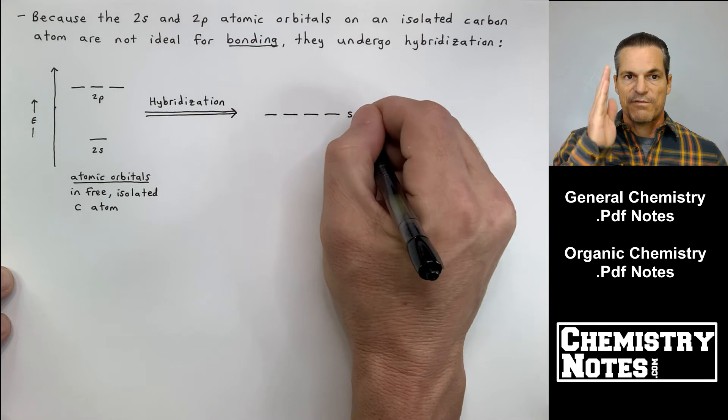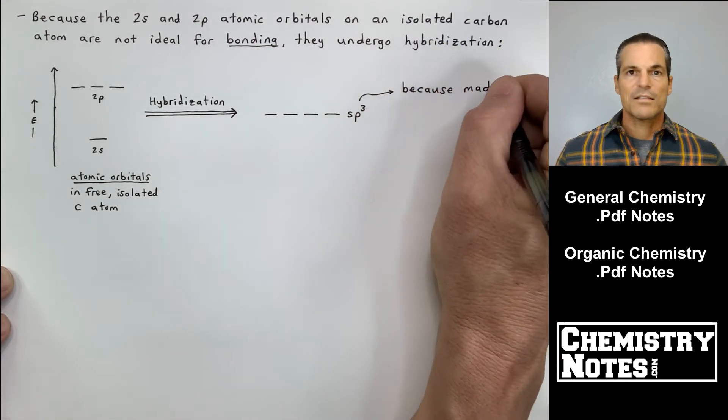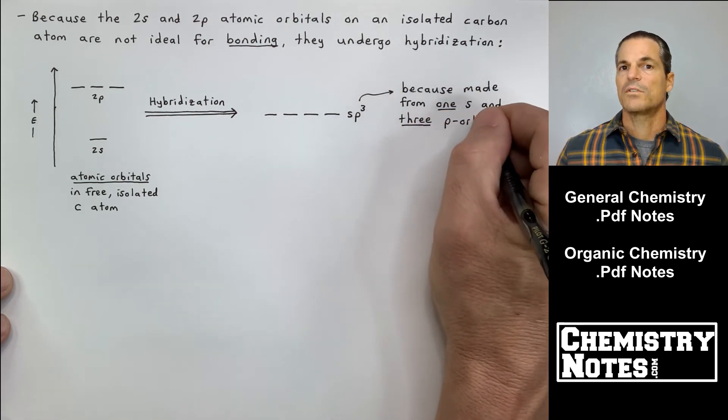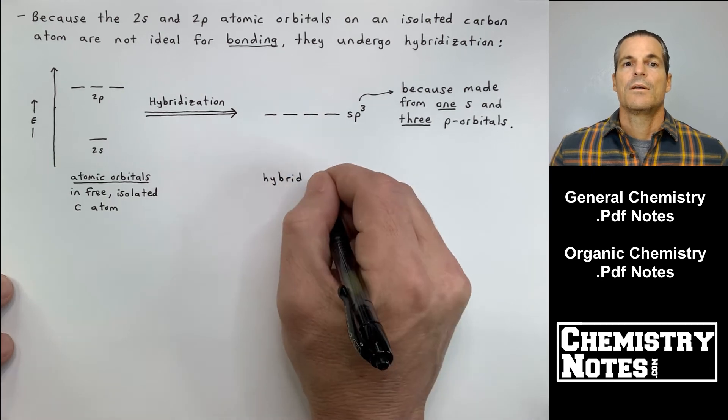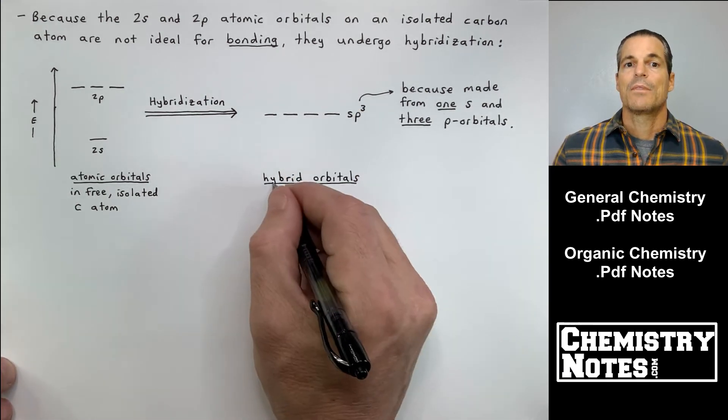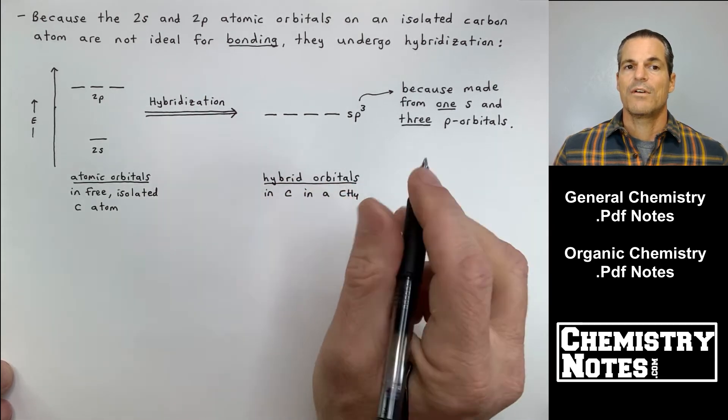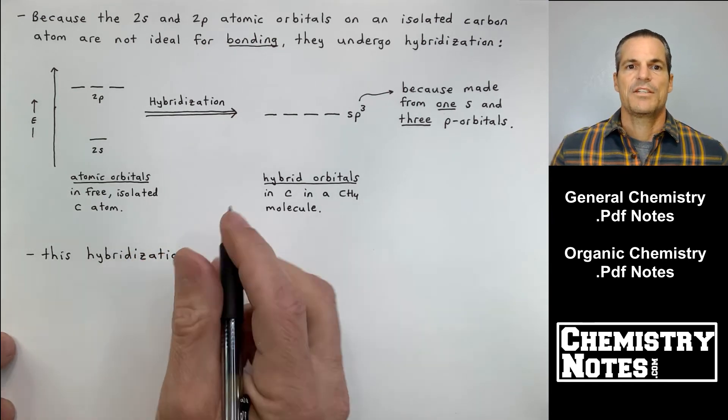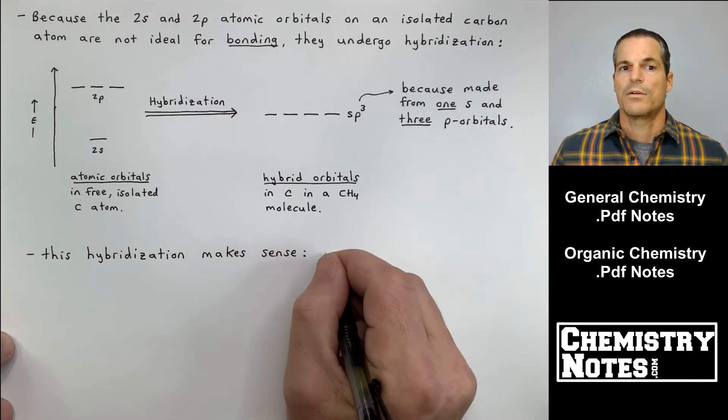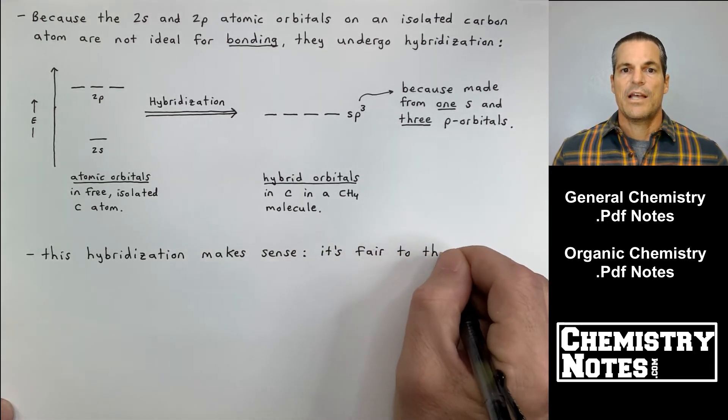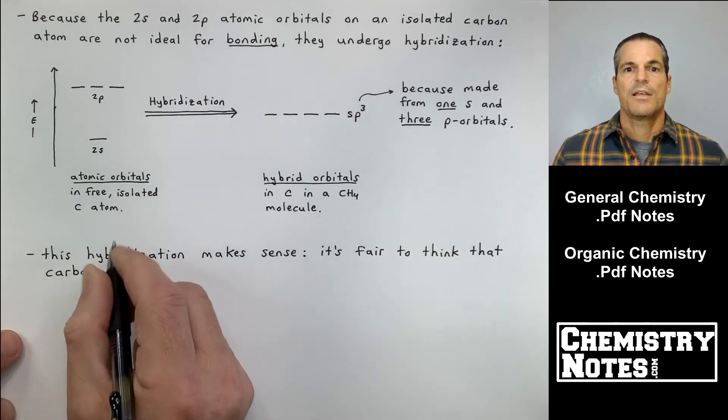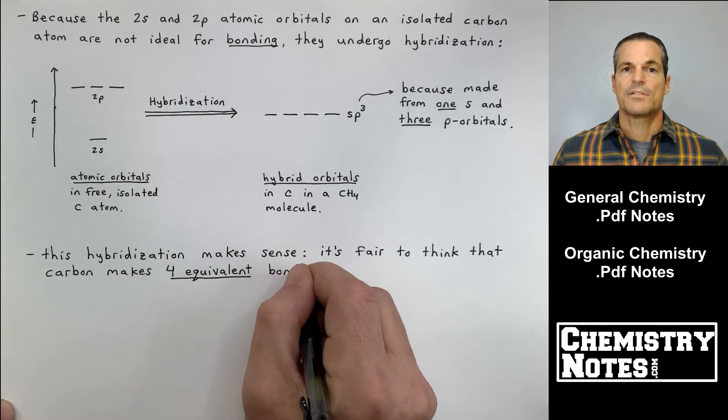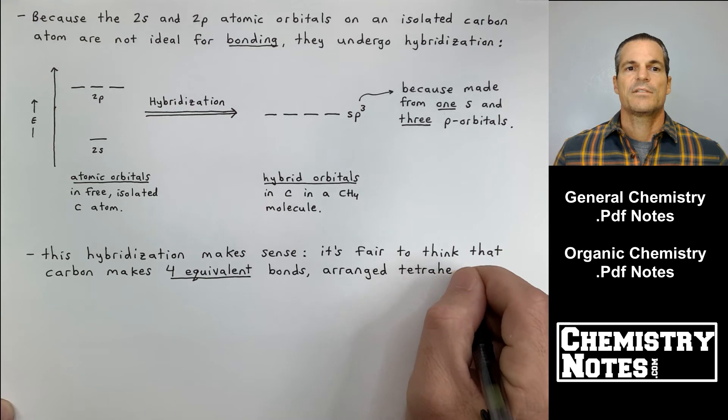If you look at the left column, you have the atomic orbitals in a free isolated carbon atom. We have to mix those into four equivalent new hybrid orbitals. We need to have four because we're going to make four single bonds from carbon to hydrogen. The sp3 is named that way because those four hybrid orbitals are made from the mix of one s orbital, the 2s, and three 2p orbitals. The right-hand column after hybridization shows the hybrid orbitals in carbon in a CH4 molecule.